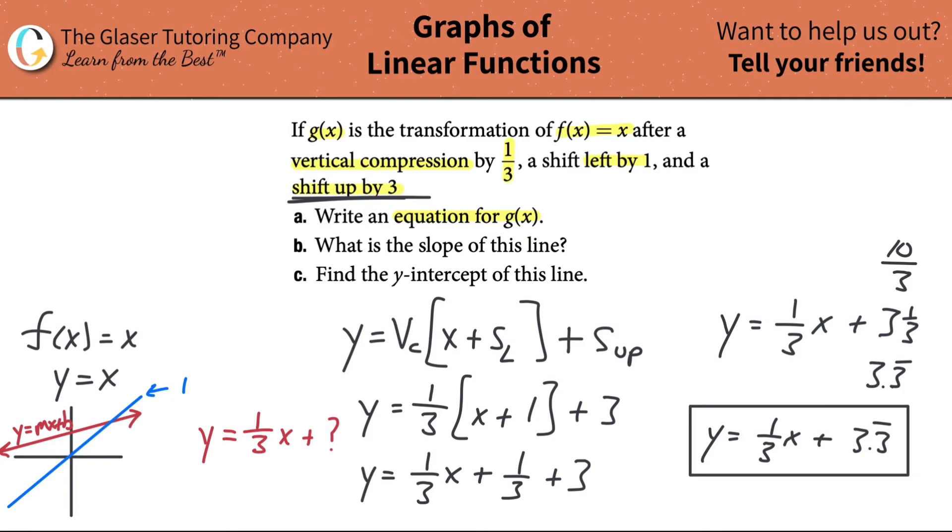So 3.3 repeating. Now this is the equation of the line. We got the y-intercept and we got our slope. So notice the y-intercept value is positive. Didn't we say over here on the graph that should be positive? See how beautifully that works? So that's the equation.